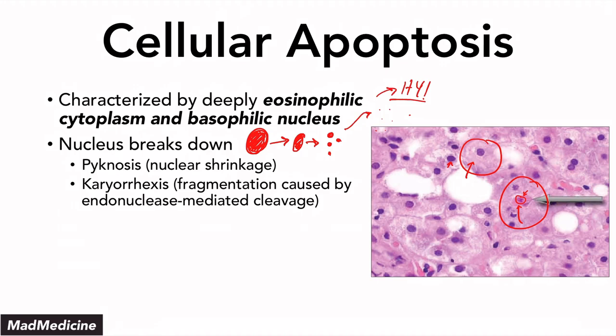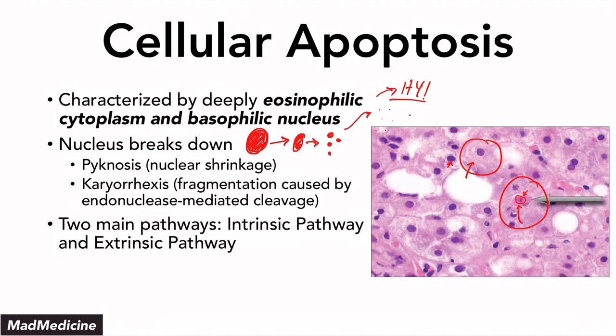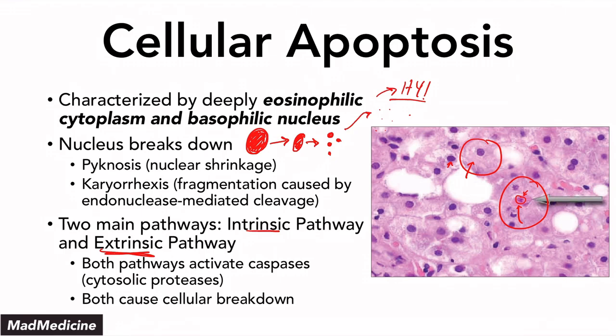When it comes to cellular apoptosis, there are two main pathways you need to be aware of. The intrinsic pathway is where a cell kills itself from inside — it's more intracellular. The extrinsic pathway is where some external factor activates genes causing cells to start killing themselves off. Both pathways involve caspases and both involve cellular breakdown. In upcoming videos, we'll discuss both the intrinsic and extrinsic pathways separately.